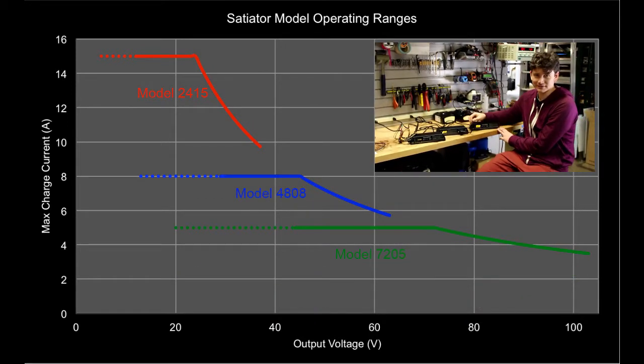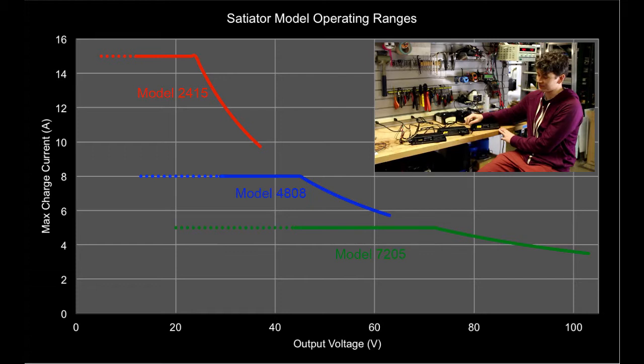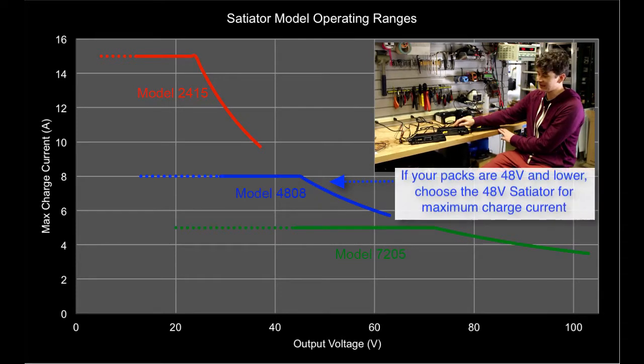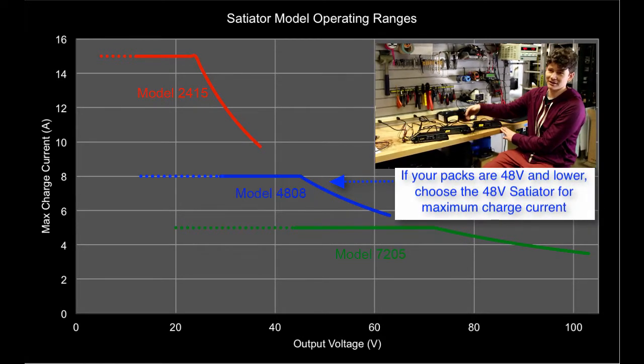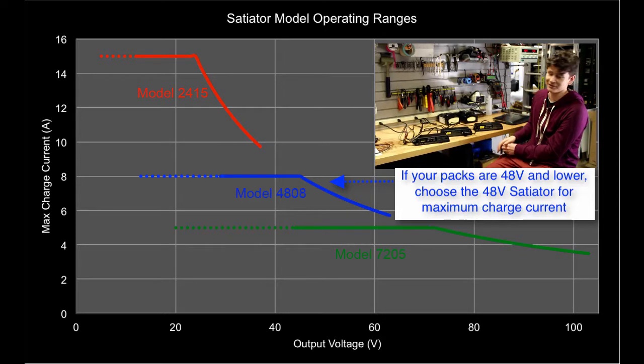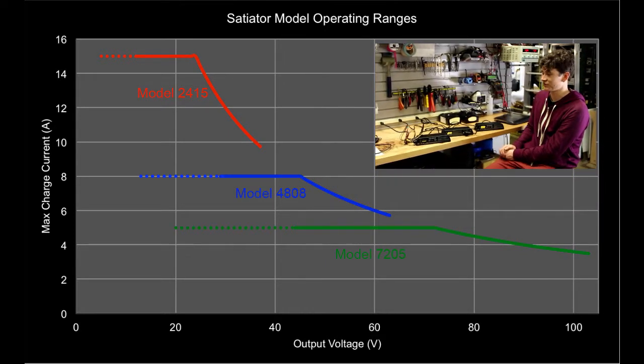If you expect all your batteries to be 50 volts nominal or less, so a full charge of 63 volts or less, then the 48 volt model here you'll get the maximum charging rate at your disposal and that means quicker charge times.